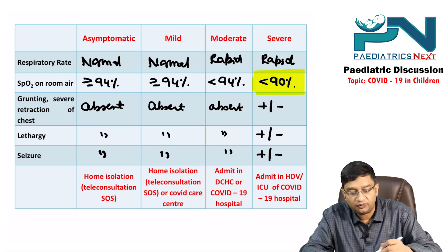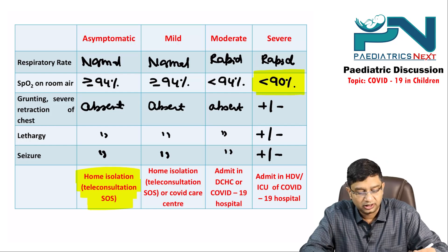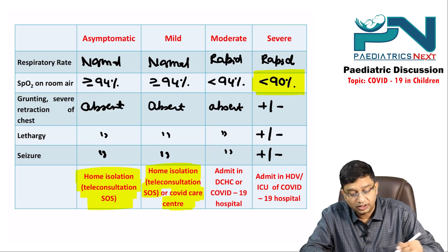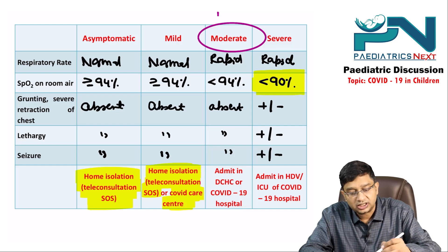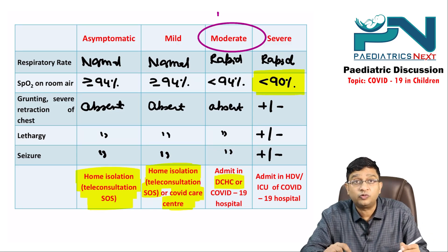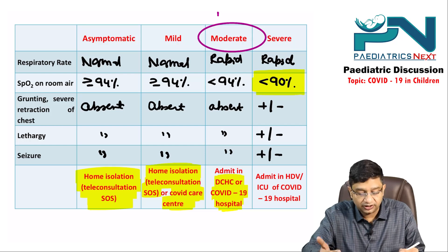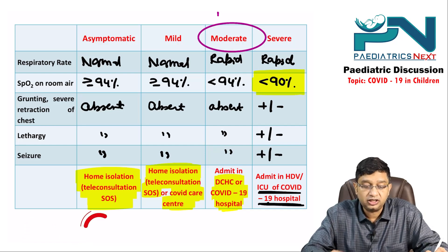For management location: asymptomatic requires only home isolation with teleconsultation if needed. Mild cases require home isolation with teleconsultation or a COVID care center. Moderate cases require admission to a dedicated COVID health center or COVID-19 hospital. Severe cases require admission to the ICU of a COVID-19 hospital.